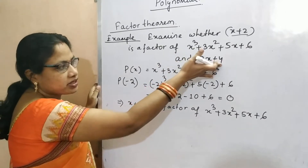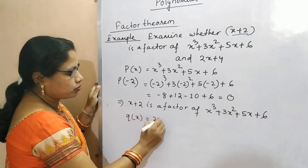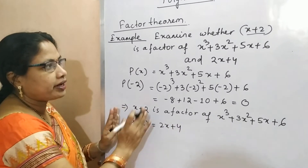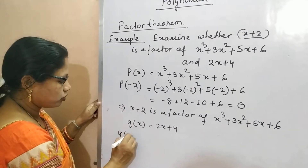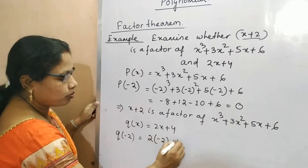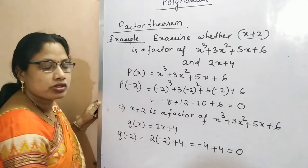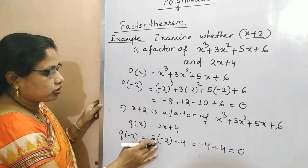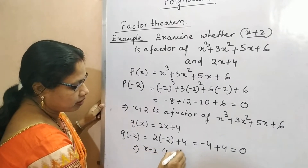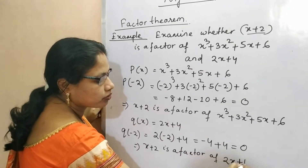Now test for the second polynomial. Let Q of X equal 2X plus 4. We find Q of minus 2: that is 2 multiplied by minus 2 plus 4, which equals minus 4 plus 4, equal to 0. So here also, X plus 2 is a factor of 2X plus 4. This is verified.